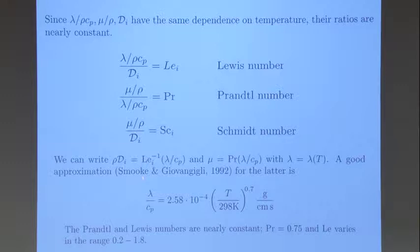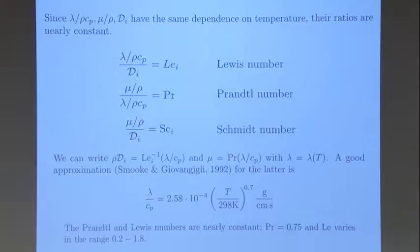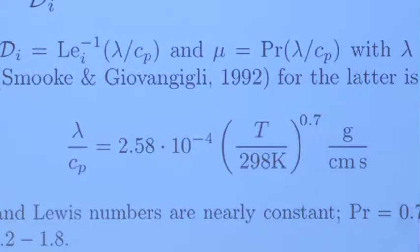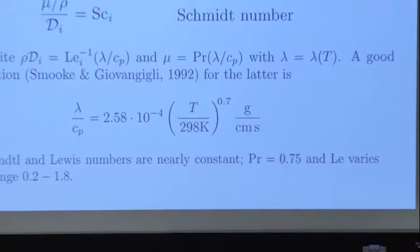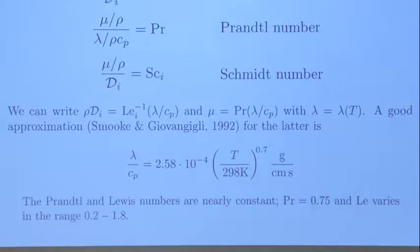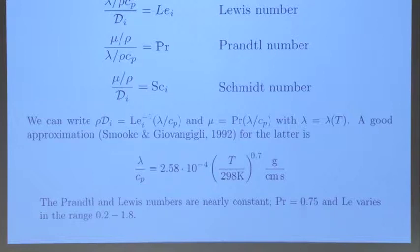The quantity lambda over Cp, and therefore rho times D_i, will depend on temperature like approximately a 0.7 power law. In the Prandtl and Lewis numbers, as I said, nearly constant — Prandtl number is about 0.75. Lewis number varies between 0.2 and 1.8 in general, though you may find situations outside that range. I emphasize this because it's an important thing: combustion processes are affected by variation in Lewis number when it is a little less than 1 or a little higher than 1.